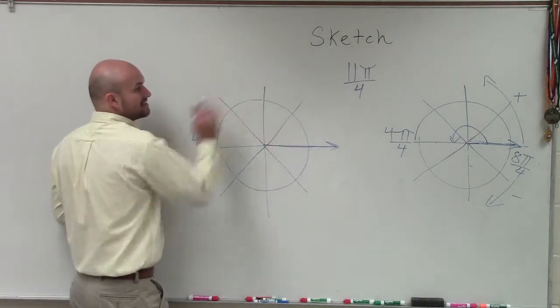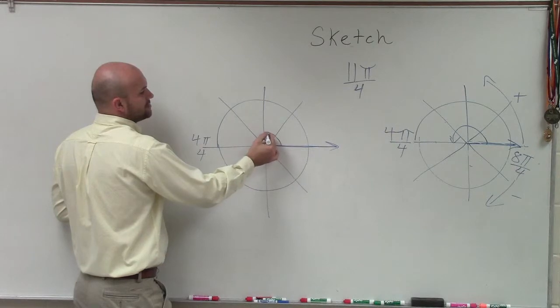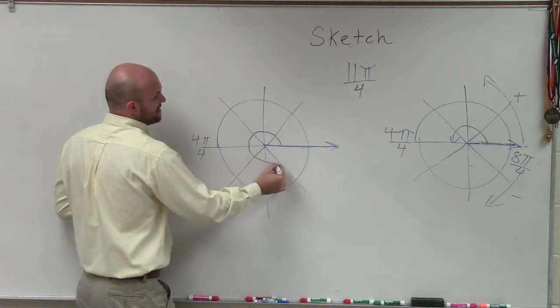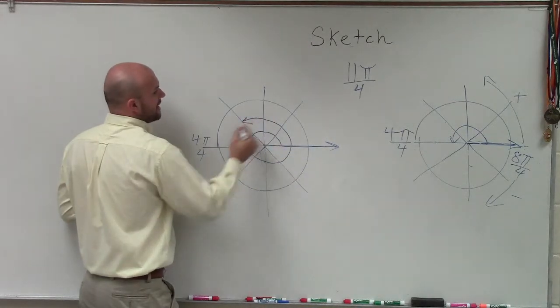So therefore I start here, and we're just going to keep on counting until we get to 11π over 4. So 1π over 4, 2π, 3π, 4π, 5π, 6π, 7π, 8π, 9π, 10π, 11π over 4.